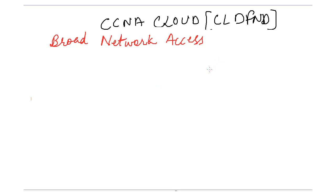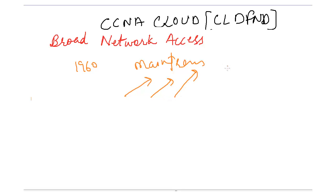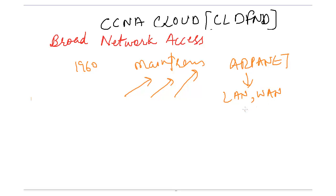Let's talk about broad network access. To set the context, back in 1960 we used to have mainframes and worked directly on mainframe servers with no network. After some time, the US Department of Defense introduced ARPANET so we could connect to mainframe devices from far places. After that we saw the introduction of LAN — local area network — and then wide area network.